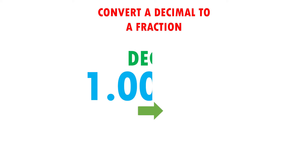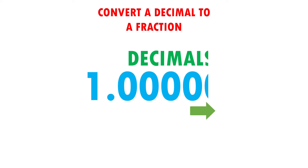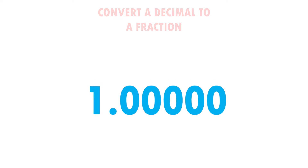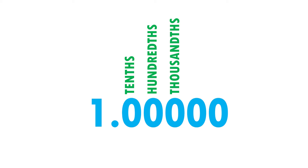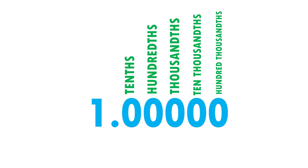From the decimal point to the right, the numbers are called decimals and have different names according to their position. In the first position they are called tenths, in the second place hundredths, in the third place thousandths, in the fourth place ten-thousandths, and in the fifth place hundred-thousandths.